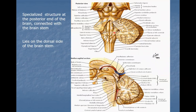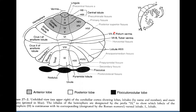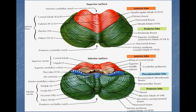Let us return to our theme, the cerebellum. The cerebellum is divided into three lobes: anterior, posterior, and flocculonodular, indicated here in different colors. Red is anterior, green is posterior, and blue is flocculonodular or vestibular. The functional denomination is spinal cerebellum for the anterior lobe, pontine cerebellum for the posterior lobe, and vestibular cerebellum for the flocculonodular lobe.